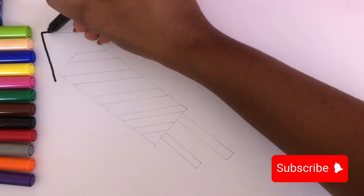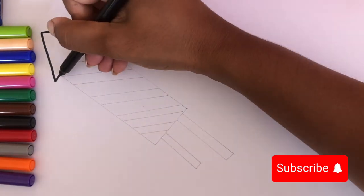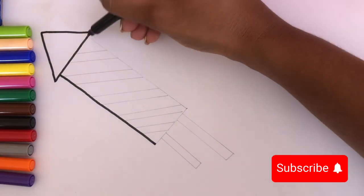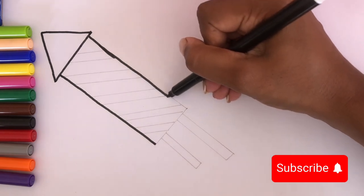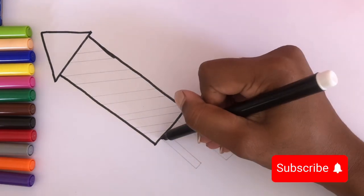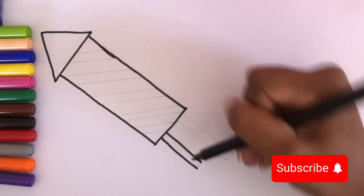We start by drawing a triangle, and a rectangle, and two much smaller rectangles.